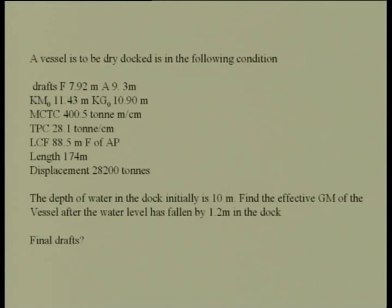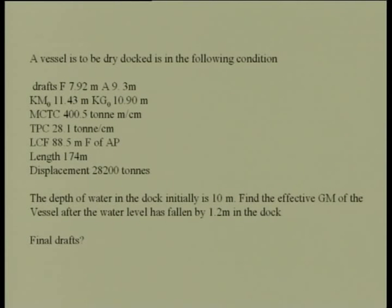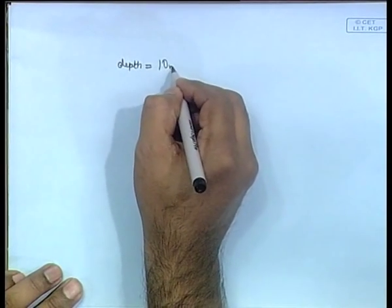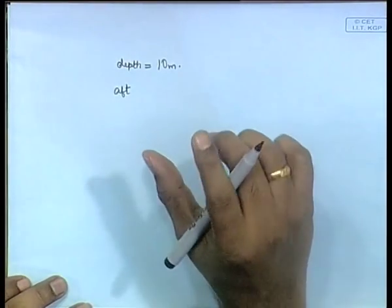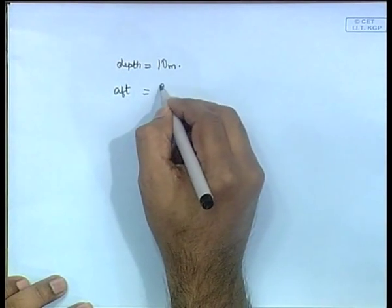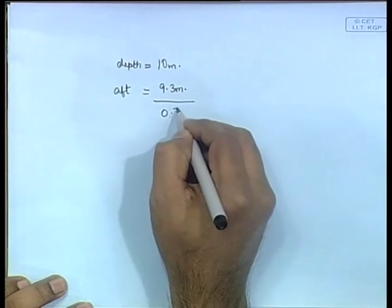The only slightly tricky thing in this problem — the rest is similar to previous problems where you find G₀, G₁, change in GM, and the final GM. You are given draft forward and aft, so you know the initial trim. The depth is 10m; taking the aft section because the aft draft is greater at 9.3m, there is a 0.7m clearance.